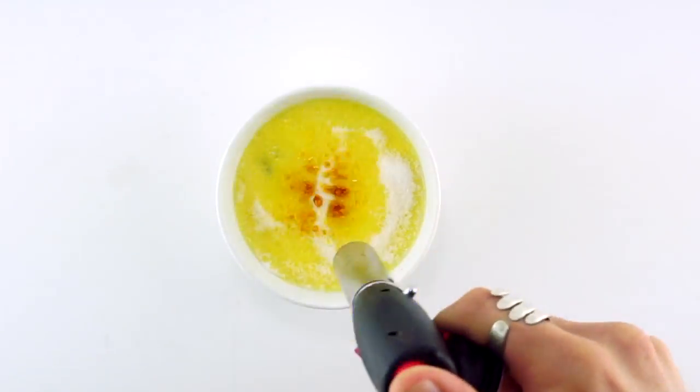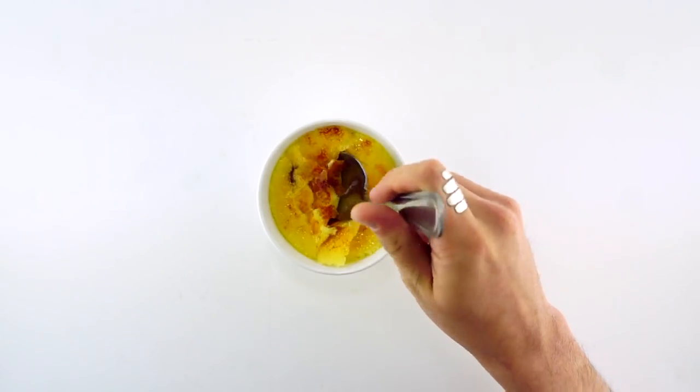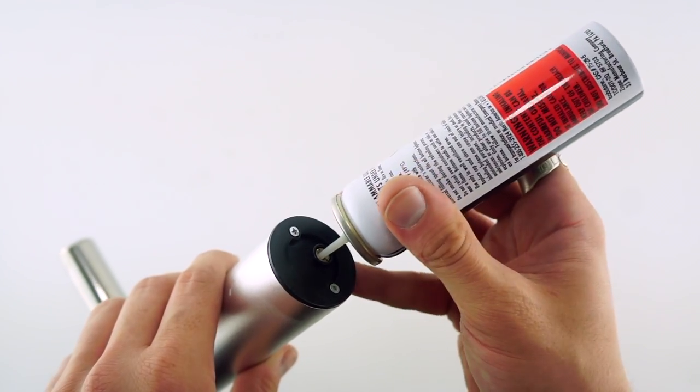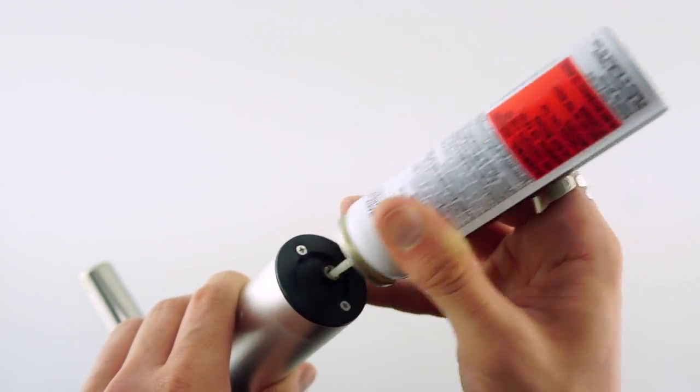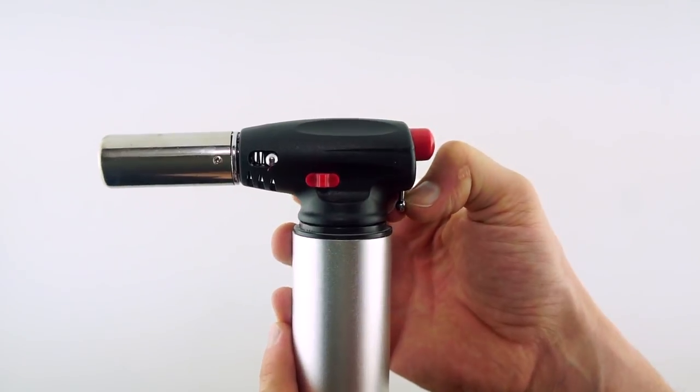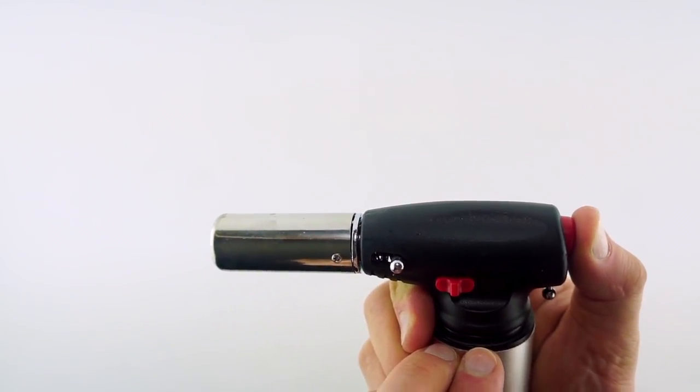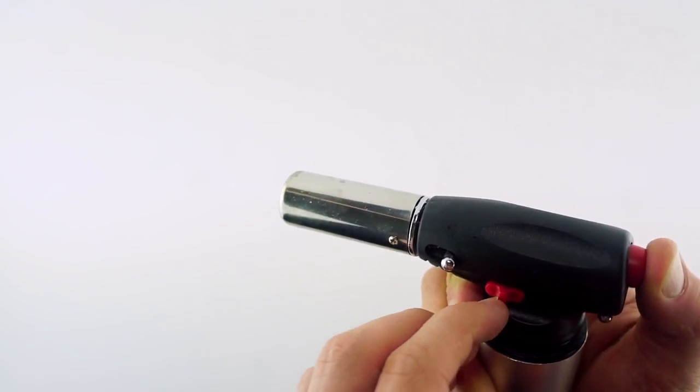So I made some creme brulee. This is just like a kitchen blowtorch, and I had to fill it up with some butane, just like that. And then just pull that on that little metal piece in the back. You'll then click the red button in, you'll hear the gas start, and you're going to click it in all the way. You'll hear a click, and that will ignite it.